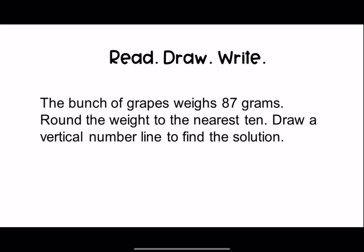It's your turn now to do a redraw-write question on your own. Get out a piece of paper and a pencil, a dry erase board, or if you have access to Google Jamboard you can use that too. We'll read the question together, then you'll draw a model to answer the question and write sentences to answer it. When you're done, you can look in the description box below to compare your answer to the correct answer. Here's your question: the bunch of grapes weighs 87 grams. Round the weight to the nearest 10. Draw a vertical number line to find the solution. Do your very best and I'll see you in the next lesson.